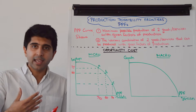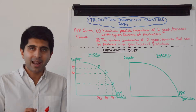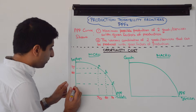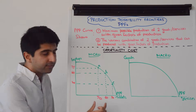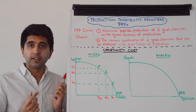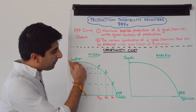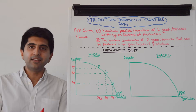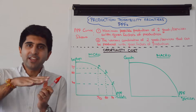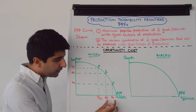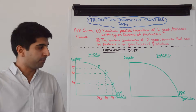Now let's say this firm wants to produce 10 more tablets, going from 60 to 70 — moving from point B to point C on the PPF. Again they are reallocating scarce resources towards more tablet production. But now they're giving up more laptops: laptop production falls from 60 to 30. So the same 10-unit increase in tablets has now meant a greater opportunity cost — 30 units of laptops given up this time.